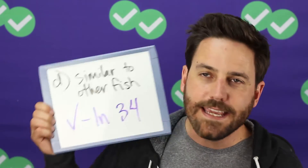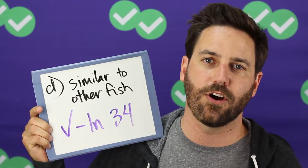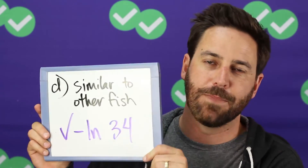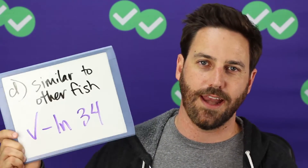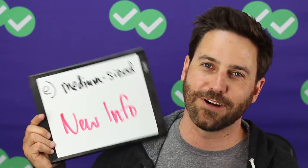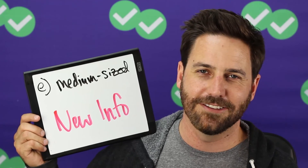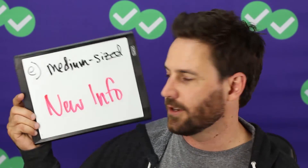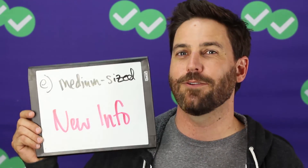Answer choice D talks about how the fish are all similar in appearance, which is discussed in line 34. This is definitely in the passage, so this is our right answer. Answer choice E is a short answer — basically medium size. There's no information about the size of the fish or the size of the group discussed in the passage, so this is new information and wrong.